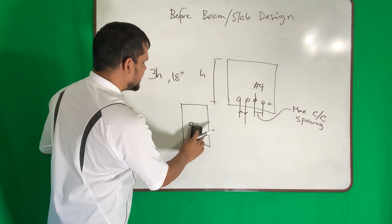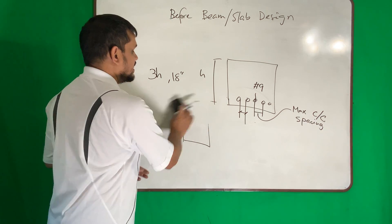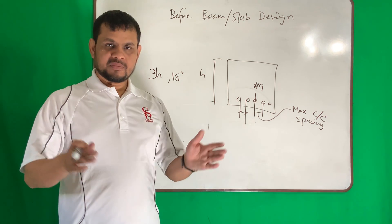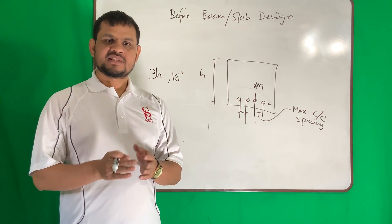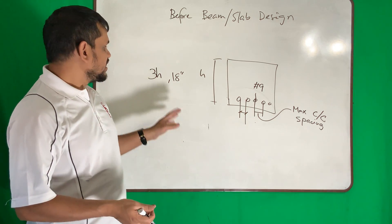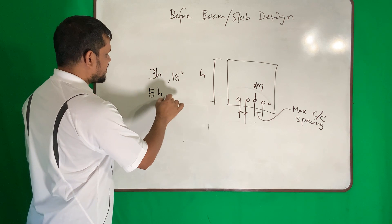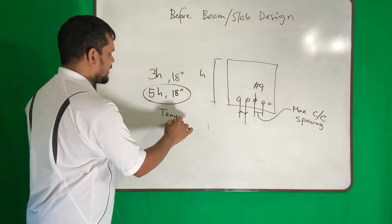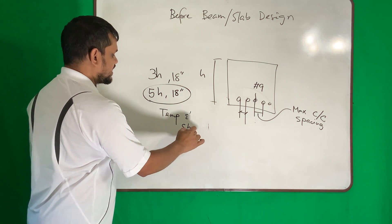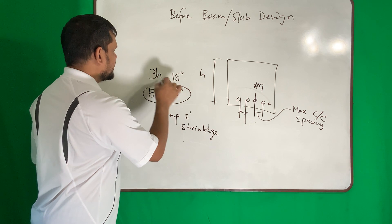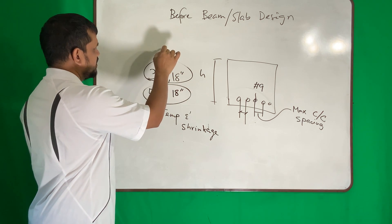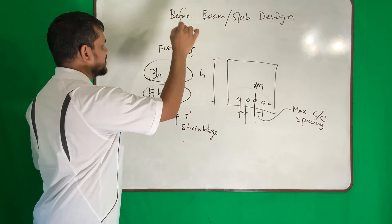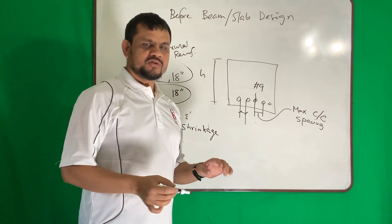If the reinforcement is for temperature or shrinkage — provided to protect against concrete shrinkage or temperature change — the maximum spacing is 5 times h or 18 inches, whichever is smaller. So 3h or 18 inches applies to flexural reinforcement, and 5h or 18 inches applies to temperature and shrinkage reinforcement.